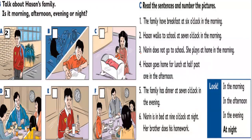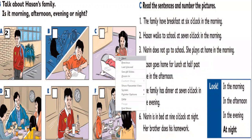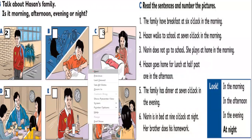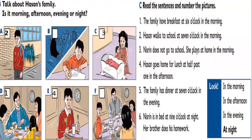The next one, which is number three: Misrim doesn't go to school — she plays at home in the morning. So which picture looks like this? It is picture C. For number four, Hassan goes home for lunch at half past one in the afternoon. Here we have the time, which is half past one, and Hassan is having his lunch.